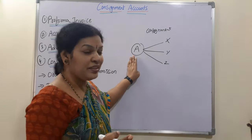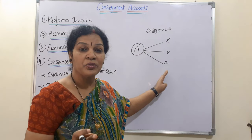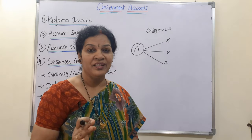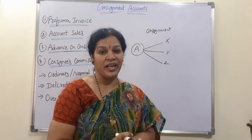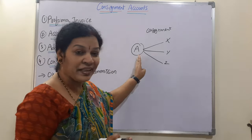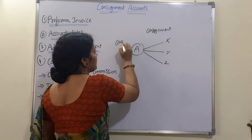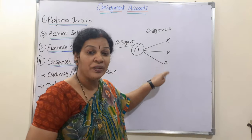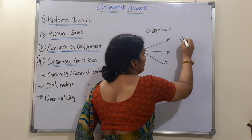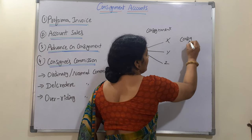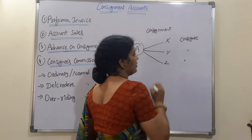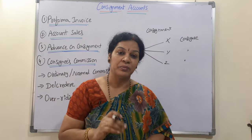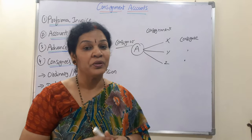The literal meaning of 'consign' is ordering or transferring. Here A is transferring the goods to X, Y, Z, so X, Y, Z act as agents. In accounting language, we call A the consignor. The agents X, Y, Z are called the consignee.